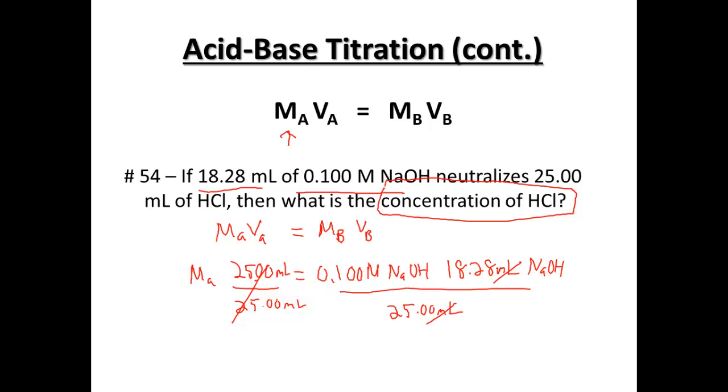Milliliters will cancel out milliliters. 0.100 times 18.28 divided by 25 should give us approximately on our calculator, and that's our concentration molarity. In this case, it's going to be the molarity of HCl.